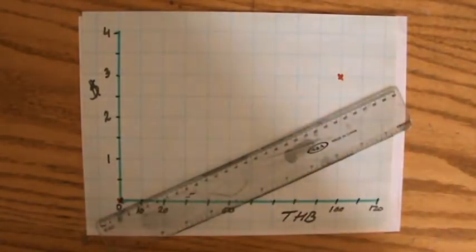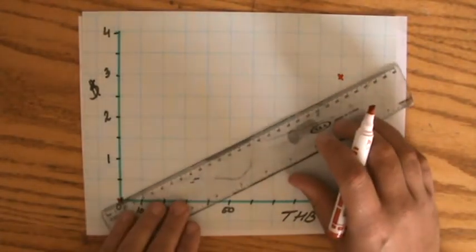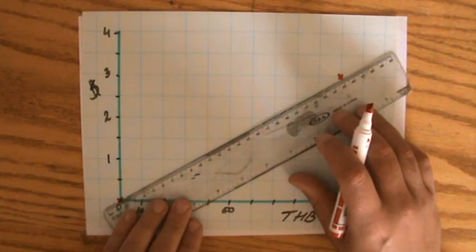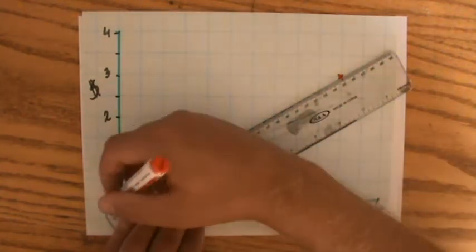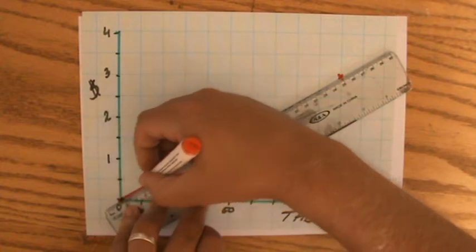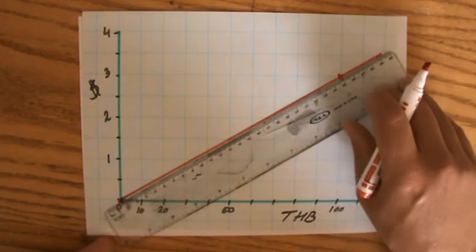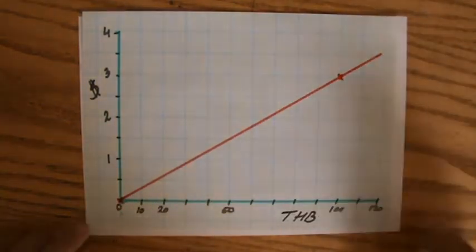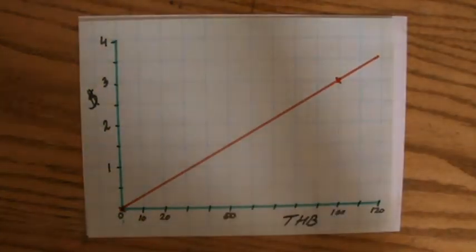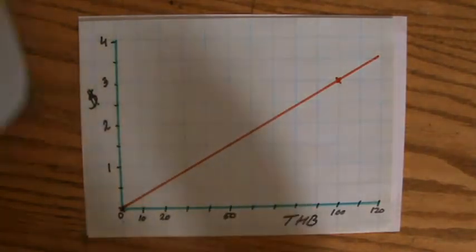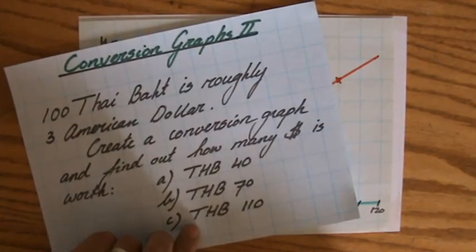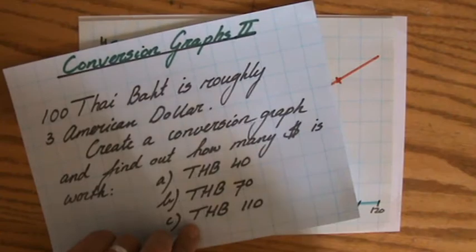Zero Baht, zero US. So I can draw my line. And you do that with a sharp pencil—I have a thick marker, so that is not ideal, but otherwise you can't see what I'm doing. There we go, that's a conversion graph. Beautiful. Okay, 40 Baht, 70 Baht, 110 Baht—I'm gonna use my graph.